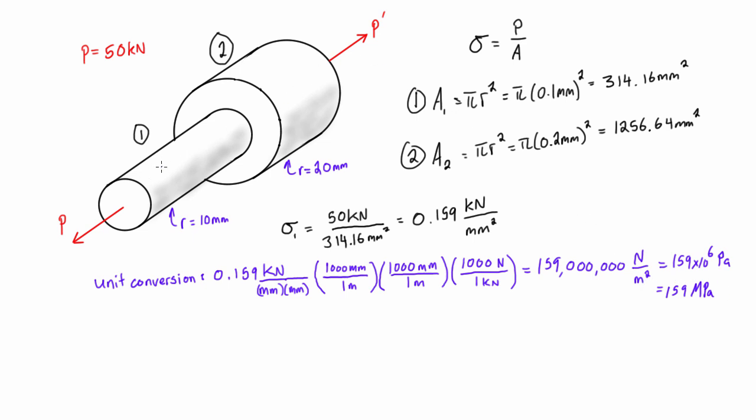If we wanted to solve for section 2 now, our normal stress here for section 2, we just do our force over our area. We have 50 kilonewtons over that area which was 1256.64 millimeters squared.